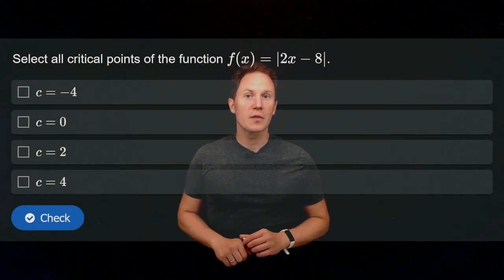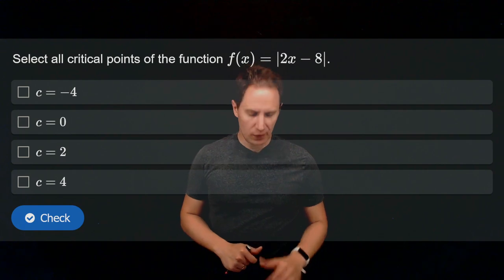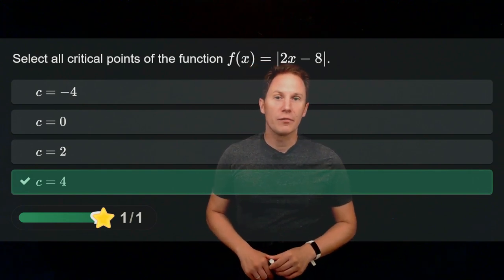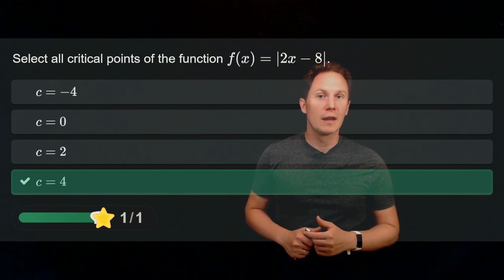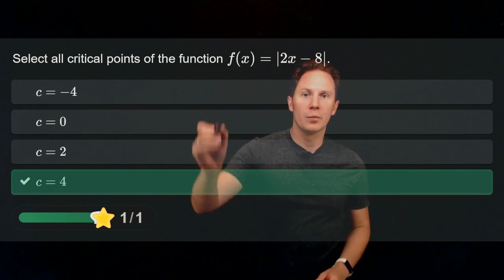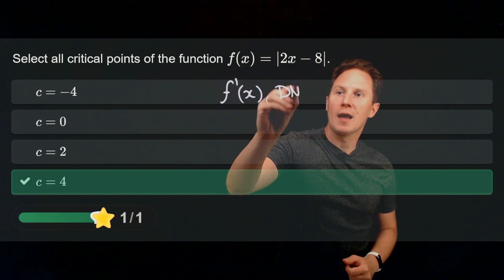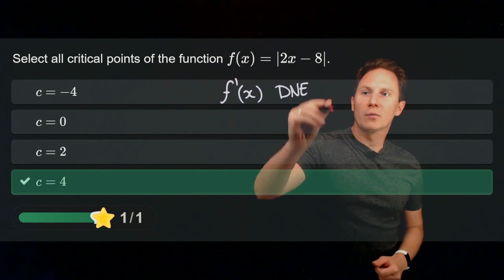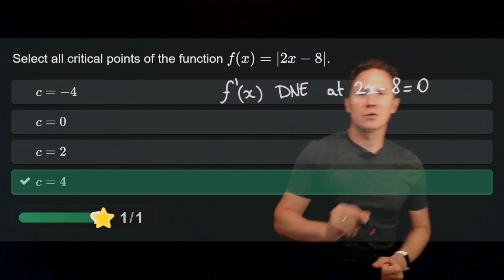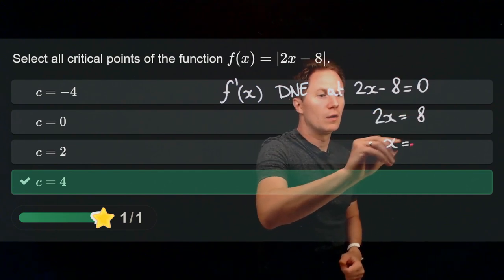Select all critical points of the function f(x) = |2x − 8|. The only critical point is c = 4. For this absolute value function, the derivative where it exists is never zero, so critical points can only occur where the derivative does not exist. That happens when the argument 2x − 8 equals zero, which gives x = 4.